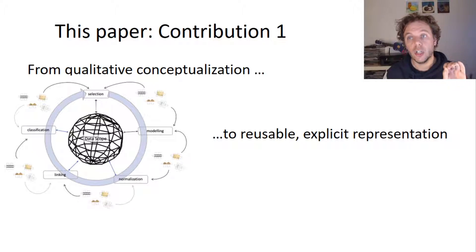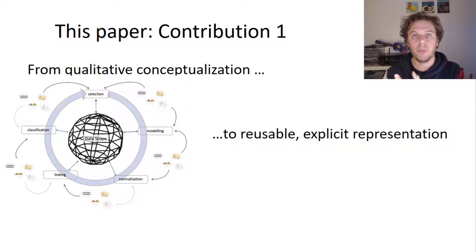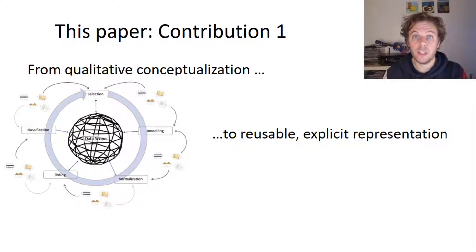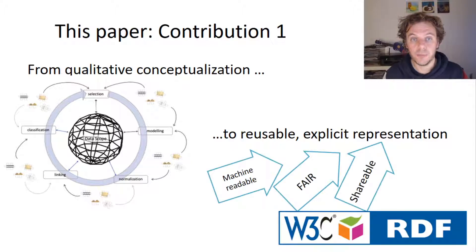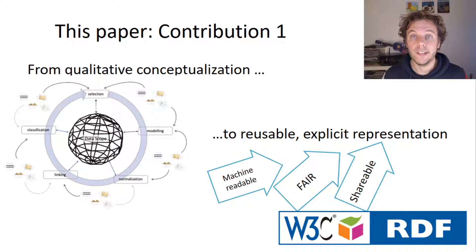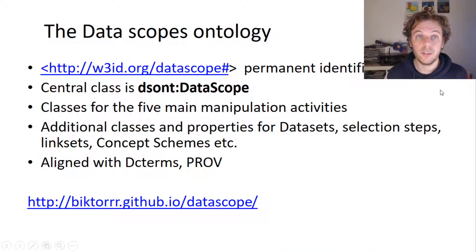This is a very nice research contribution, but it's a theoretical one, and it's hard to use in practice to point to a specific data scope. In this work, we go from this qualitative conceptualization and move to an explicit, reusable representation of data scopes — in other words, an ontology. What we do with this is make data scopes machine readable, FAIR, and shareable using standardized forms of describing data and ontologies.